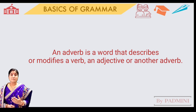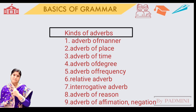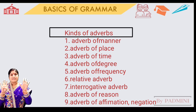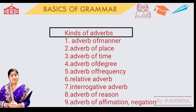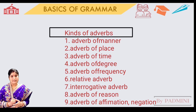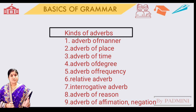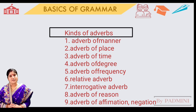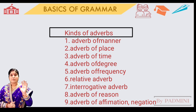Next we will look at the kinds of adverbs. There are nine kinds of adverbs. They are: adverbs of place, adverbs of time, adverbs of manner, adverbs of degree, adverbs of frequency, relative adverbs, adverbs of region, adverbs of affirmation and negation, and adverbs of direction.